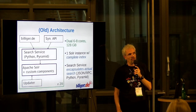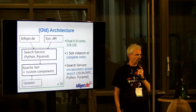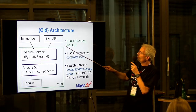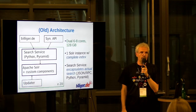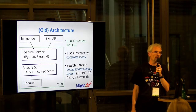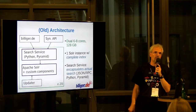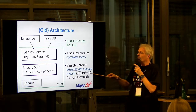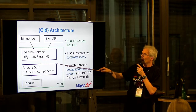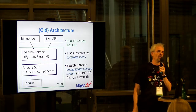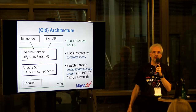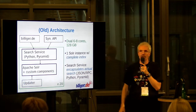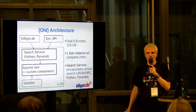Back in the old days, that is until February this year, the architecture looked like this. This green box would be one server — typically a dual 6-core or dual 8-core, 128 gigabytes of RAM, terabyte SSD, pretty decent hardware. On this machine there would be one Apache Solr instance with one huge index containing all 65 million documents. We fortified Solr with a few custom components, which I'll talk about in depth.